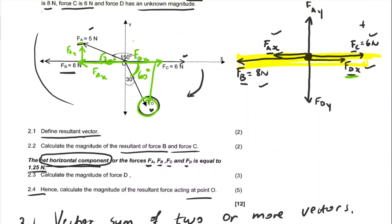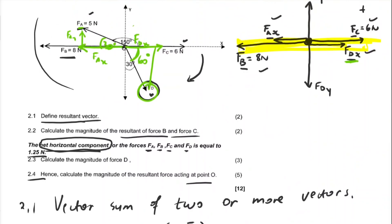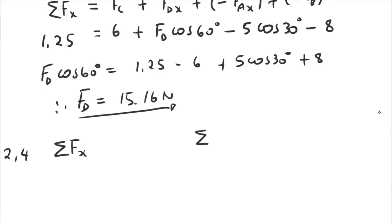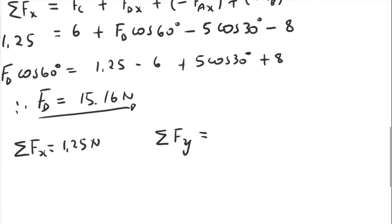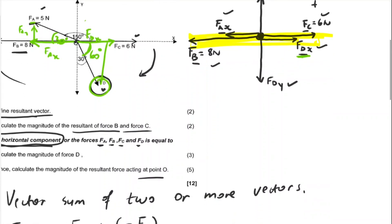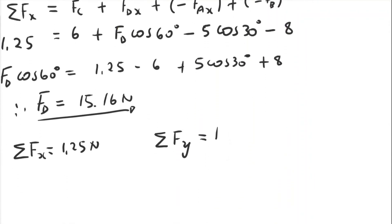Question 2.4: Calculate the magnitude of the resultant force acting at point O. To find the resultant we need the sum of forces in the x-direction and the y-direction. Sigma Fx is already given as 1.25 newtons, so we only need to calculate sigma Fy. From the free body diagram, the forces along the y-direction are FAy (upward, positive) and FDy (downward, negative).